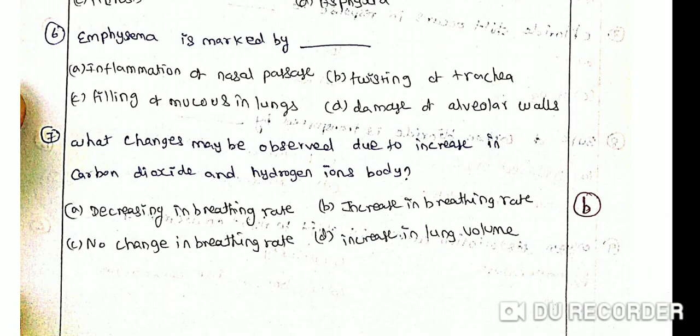What changes may be observed due to increase in carbon dioxide and hydrogen ions in body? Option A: Decrease in breathing rate. Option B: Increase in breathing rate. Option C: No change in breathing rate. Option D: Increase in lung volume. The correct answer is option B, increase in breathing rate.